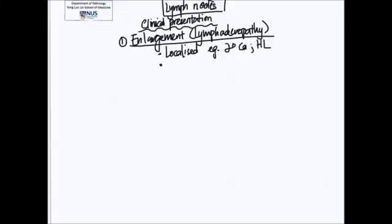in secondary carcinoma or metastatic carcinoma or other malignancies like Hodgkin lymphoma, it can be localized. Examples of generalized lymphadenopathy would be seen in some viral infections like HIV and also perhaps in autoimmune disease.